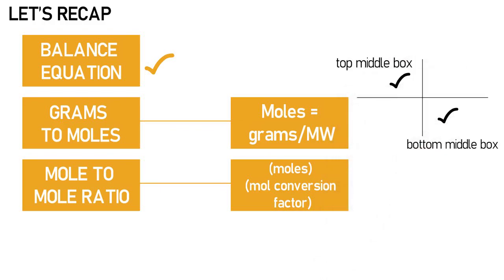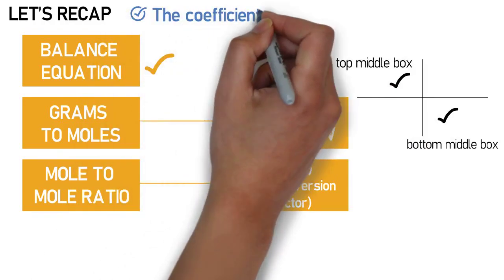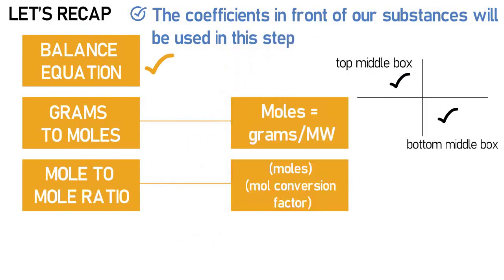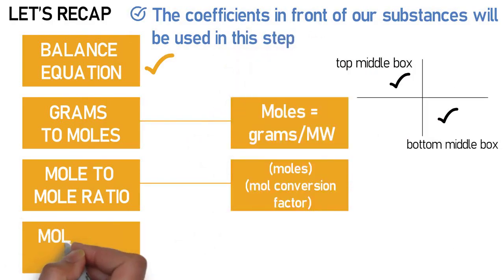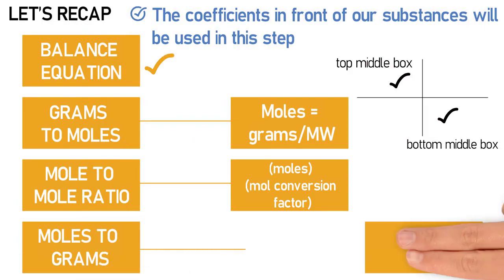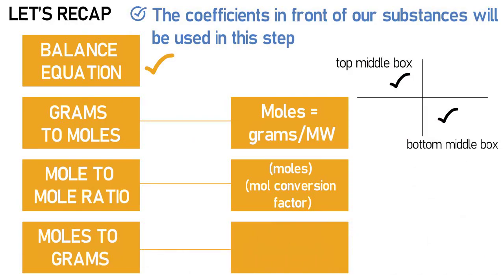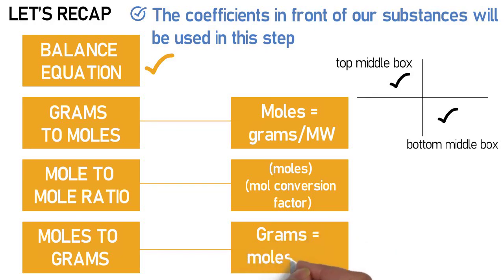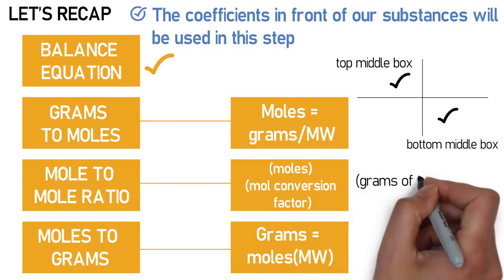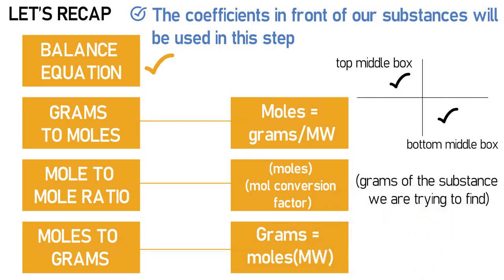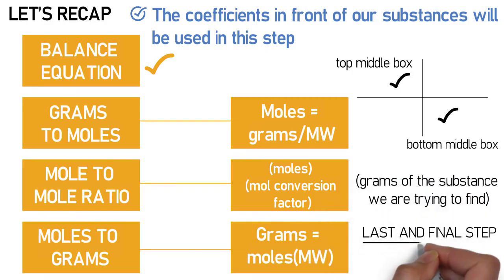For the mole conversion factor, we place the moles of the substance we want in the top middle box and the moles of what we have in the bottom portion of the middle box, using the coefficients from the balanced equation. Once we find the moles of the substance we are trying to find, we calculate the grams by multiplying those moles by the molecular weight of the target substance. This gives us the grams we are trying to find and is our last and final step.